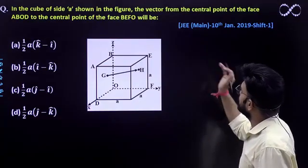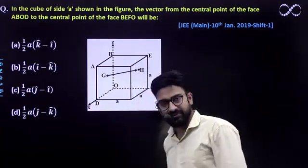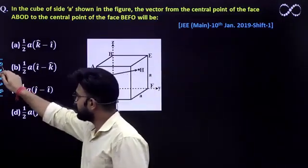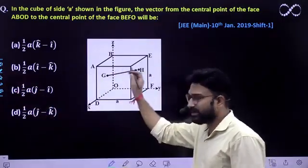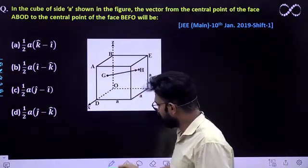So the position vector you have to find. The vector of the central point, you have to find out the vector of both these central points. Let's see. First we'll take the position vectors of both points.